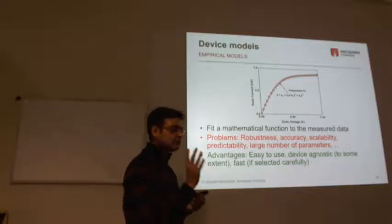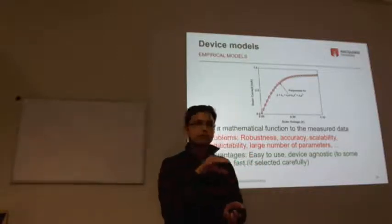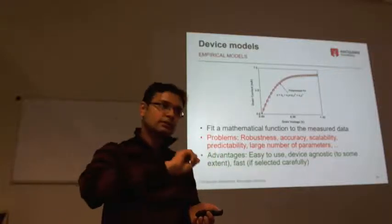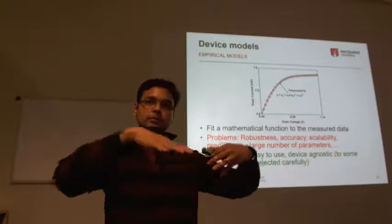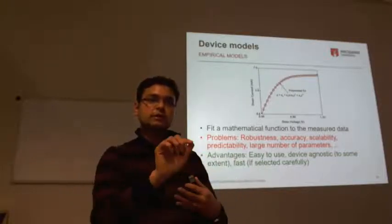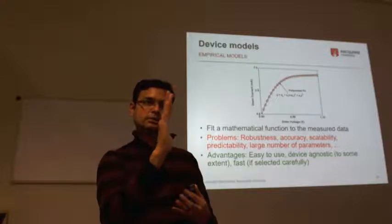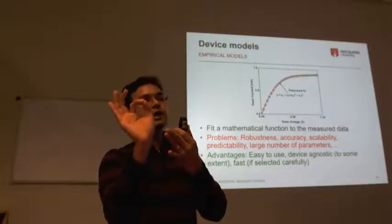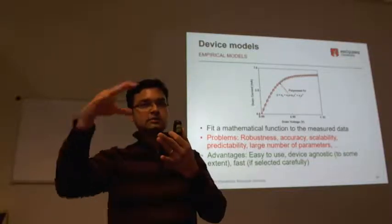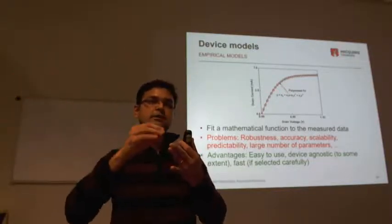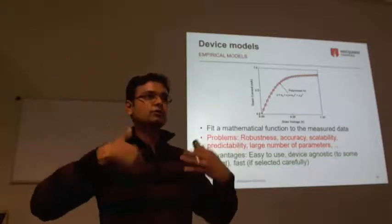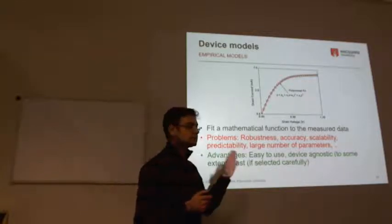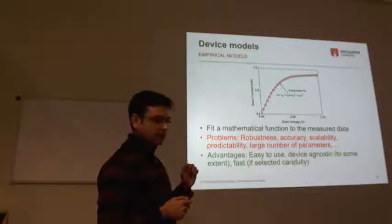During convergence, Newton-Raphson can jump slightly beyond the measured range while searching for a solution. If the empirical model behaves erratically in that region, it throws Newton-Raphson off course entirely, leading to convergence failures. This is the key limitation of empirical models: poor extrapolatory behavior combined with high-order polynomials makes convergence unreliable.